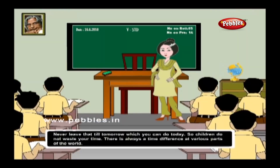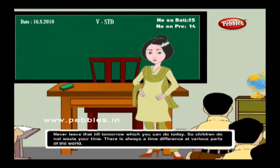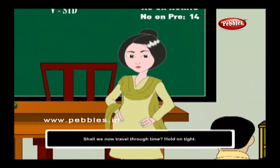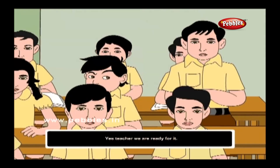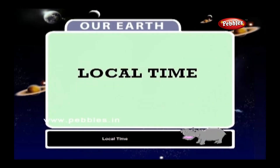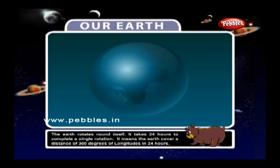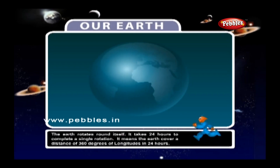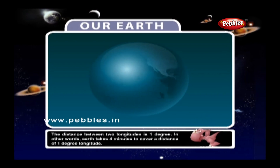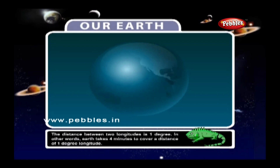Never leave till tomorrow what you can do today — children, do not waste your time. There is always a time difference at various parts of the world. The Earth rotates round itself and takes 24 hours to complete a single rotation, meaning it covers 360 degrees of longitudes in 24 hours. The distance between two longitudes is one degree. In other words, the Earth takes four minutes to cover a distance of one degree longitude.